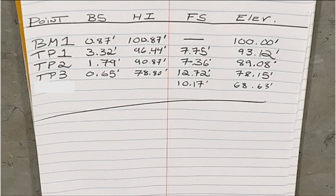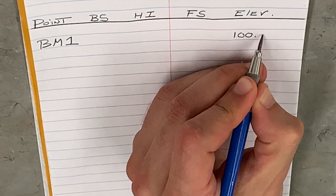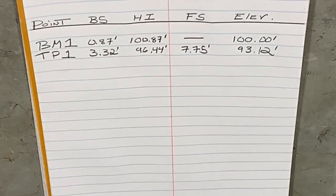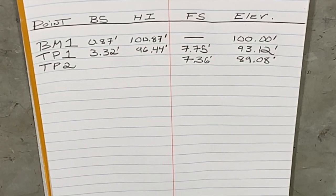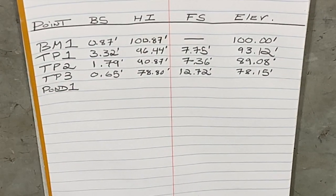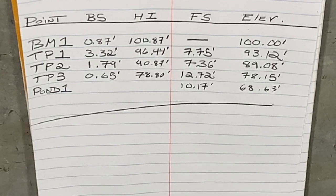For the final line, the point, back sight, and height of instrument columns remain blank because we ended by shooting a foresight, which gives us the final elevation. Since this final elevation is not a fixed known elevation like our benchmark, we simply call this point 'Pond' or 'Pond 1.' Throughout this process there is a rhythm to taking the notes: with the page divided left and right, first the foresight and elevation are recorded on the right, then the back sight and height of instrument on the left — back and forth until we reach the final elevation.